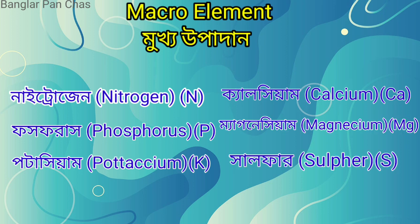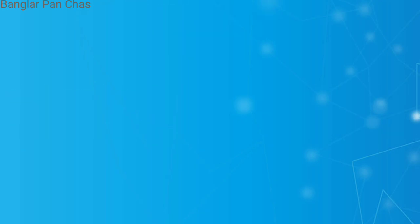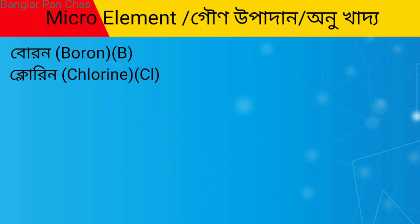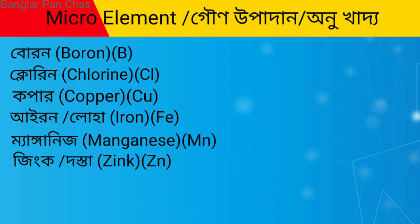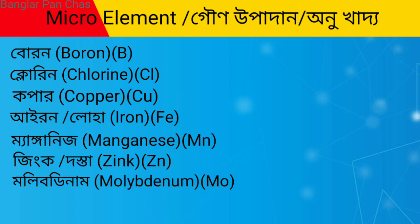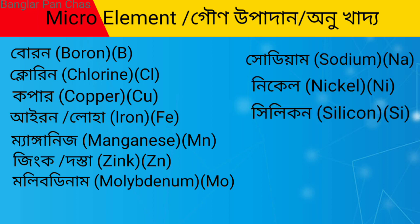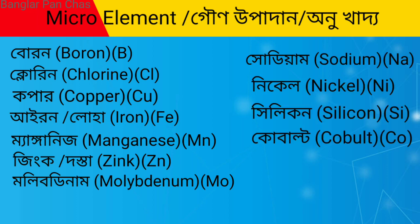These are the macroelements. The microelements are: boron, chlorine, copper, iron, manganese, zinc, molybdenum, sodium, nickel, silicon, and cobalt. These are the main elements we have to cover.